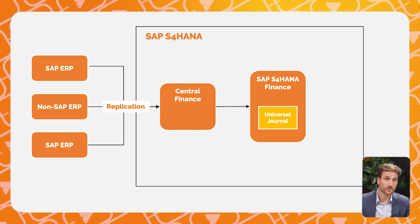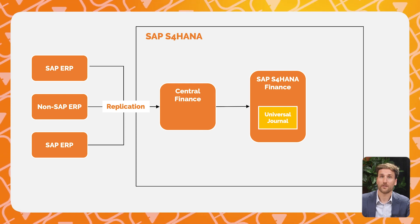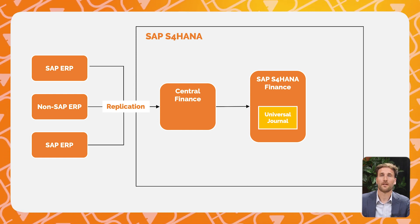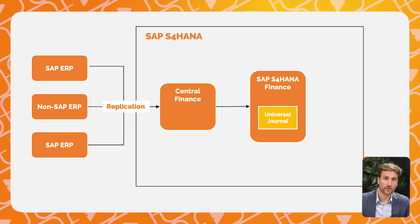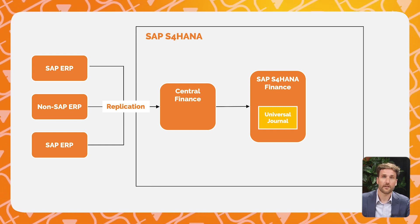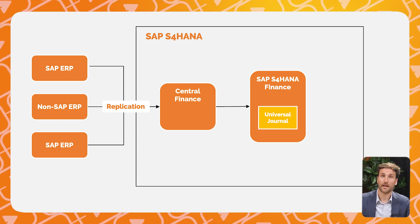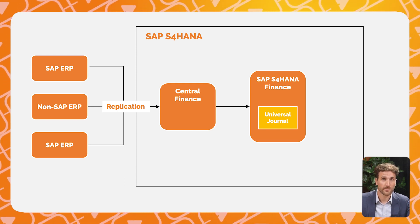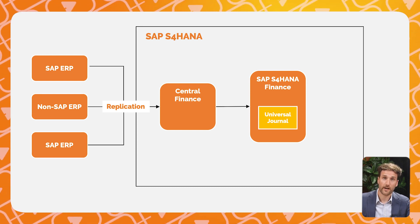Instead, it integrates with your existing systems using a replication process, allowing you to preserve investments and minimize disruption to day-to-day operations. Central finance is not a special version of SAP S/4HANA or an alternative to S/4HANA. The central finance approach is based on a standard S/4HANA system, delivering finance reporting and process execution capabilities. If you deploy central finance, you don't necessarily need to move to S/4HANA later on — you're already using S/4HANA.